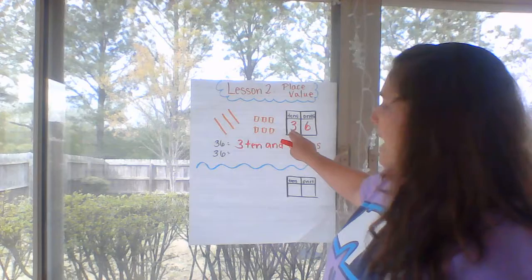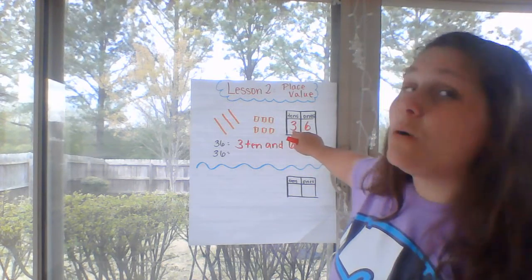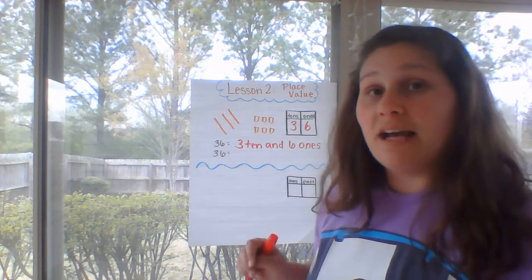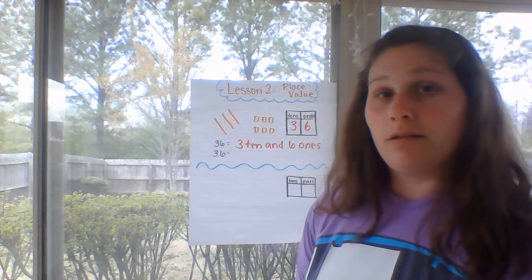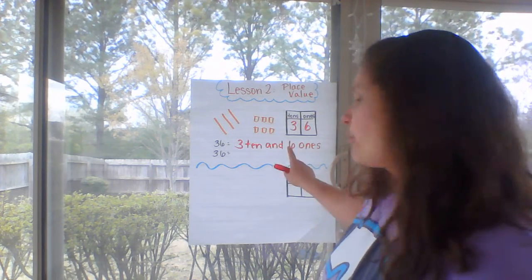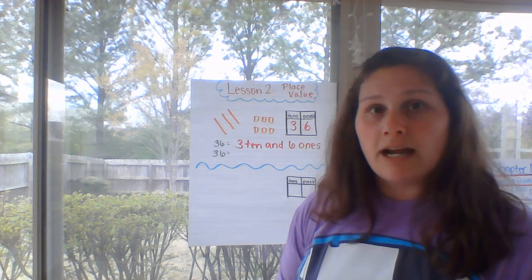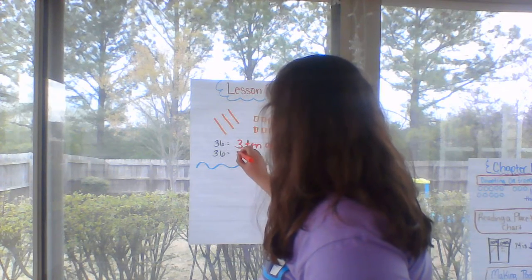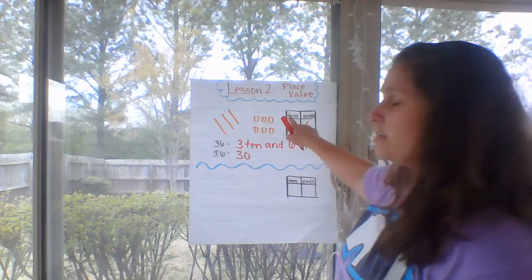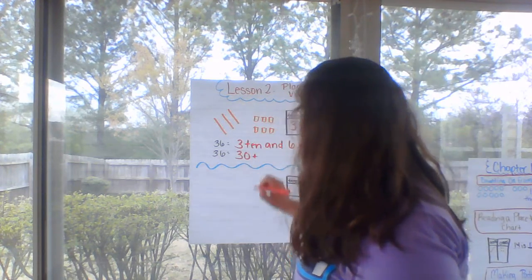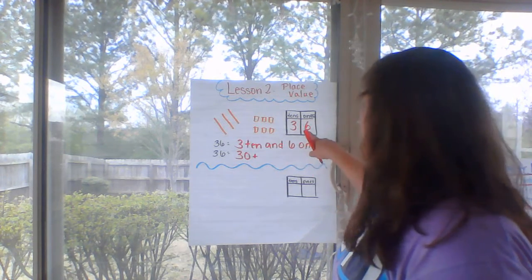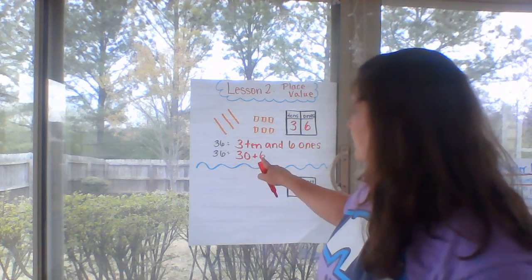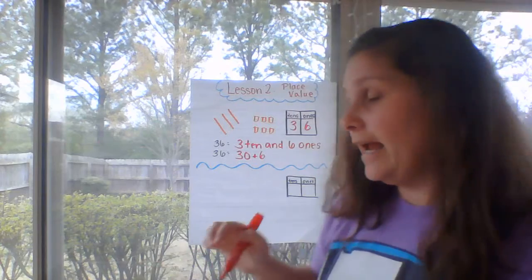Next, you're going to tell the value. What is the value? Is it only three? If it was only three, what place value would it be in? Right — it would be in the ones. But because it's in the tens place, what's it really worth? Three tens is the same thing as 10, 20, 30. So 36 is the same thing as 30 — representing the tens — plus 6, your ones.